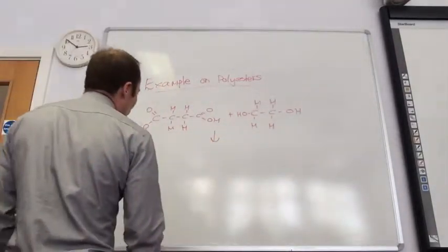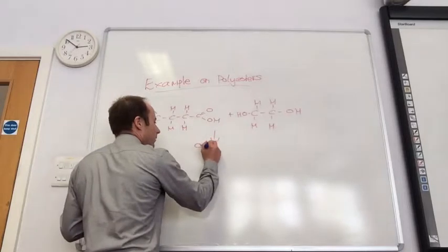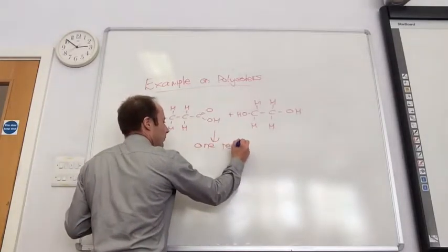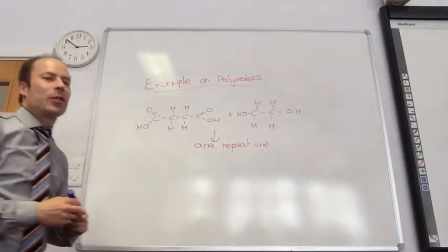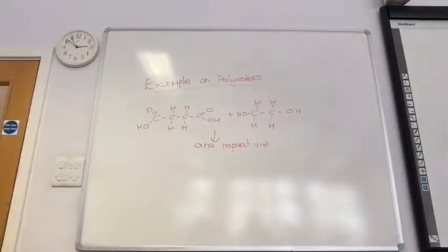I need more than one. You can just draw one repeat unit. So how do you know which OH and H goes? Does it matter? Doesn't matter which one. So just like that. Okay, so this is what it looks like.